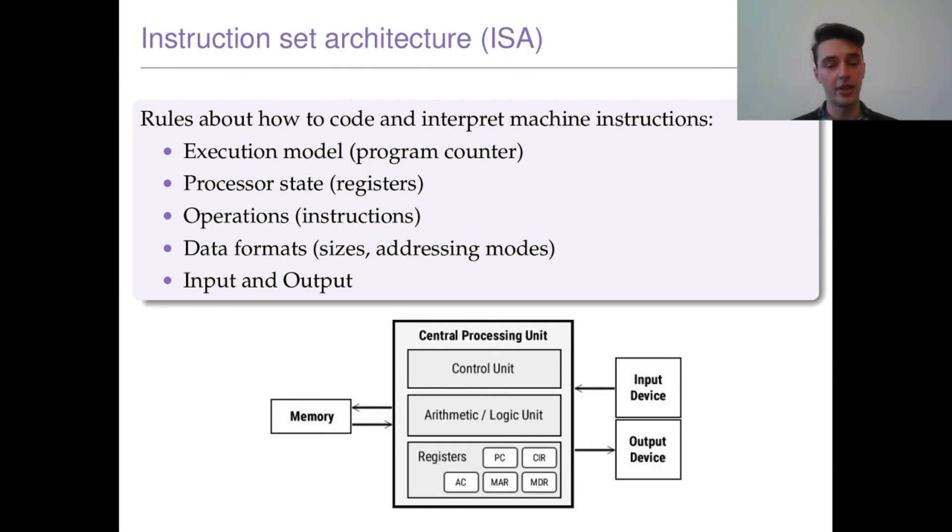The execution model is the program counter - you might have different methodologies for how you increment that. You also have the processor state, the registers. The MIPS that we'll be looking at is only 32-bit, but you could have 64-bit, so you could have a lot more registers. We have operations instructions - for example, MIPS has its own set of instructions. x86 has much more because it's very complicated compared to MIPS, but you have different ways of implementing these instructions. You also have different data formats - as we saw, we are using little-endian, but there's also big-endian. You could change any of these to come up with a different instruction set architecture. That's everything for today. I hope you found this useful, and please get in touch if you have any questions. Bye.